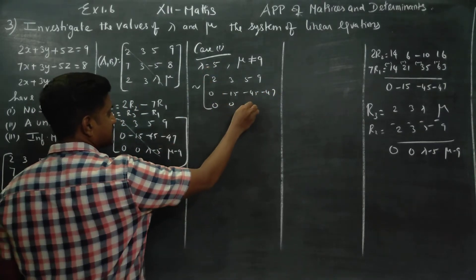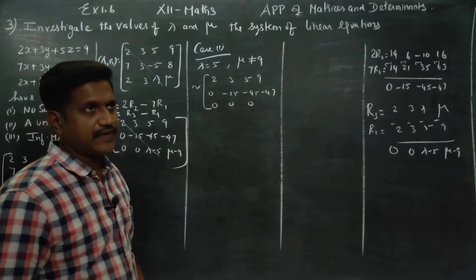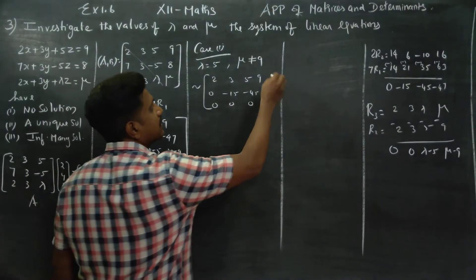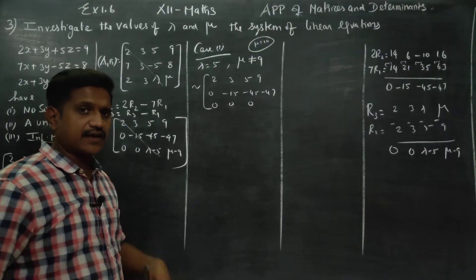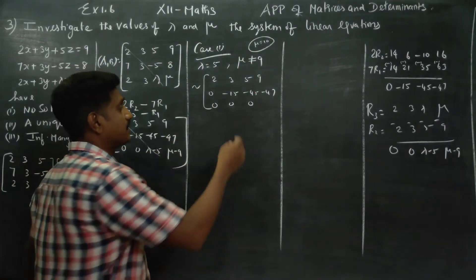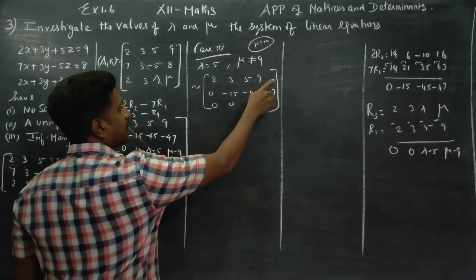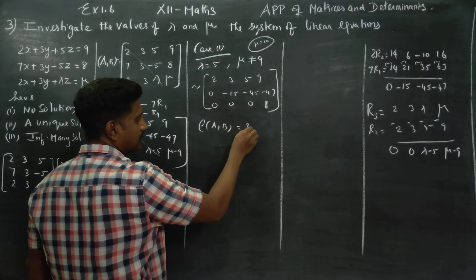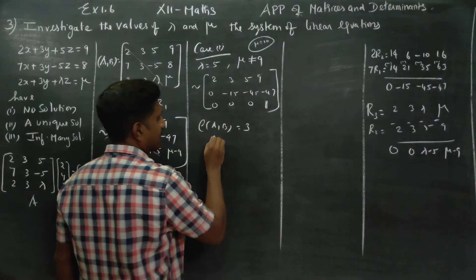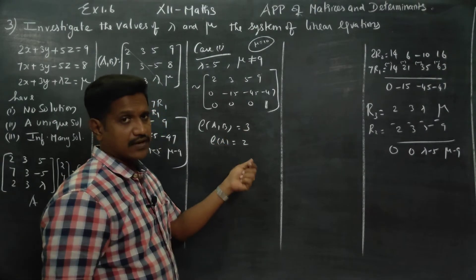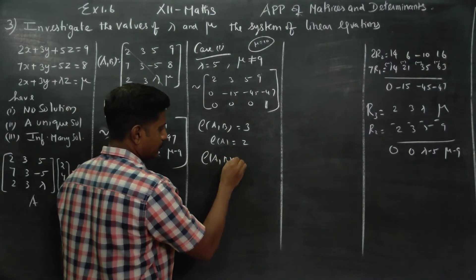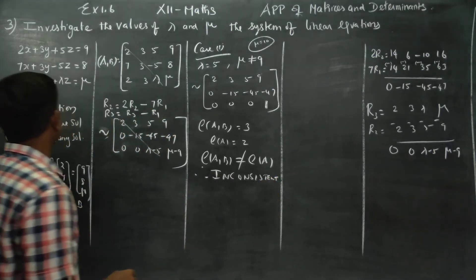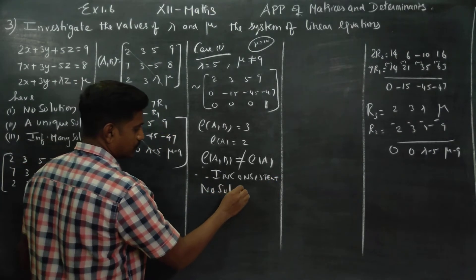For Case 1, I give lambda = 5 and mu ≠ 9 — for example mu = 10. Then 10 minus 9 is 1 (non-zero). Rank of [A|B]: there are 3 non-zero rows, so rank of [A|B] = 3. But rank of A = 2, since the last row becomes zero in A. Since rank of A is not equal to rank of [A|B], the system is inconsistent — that is, no solution.